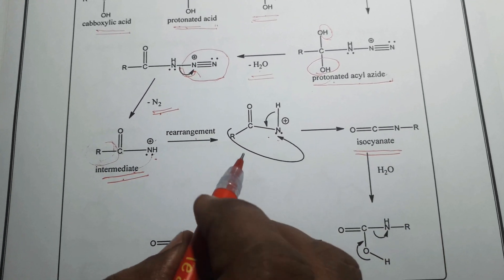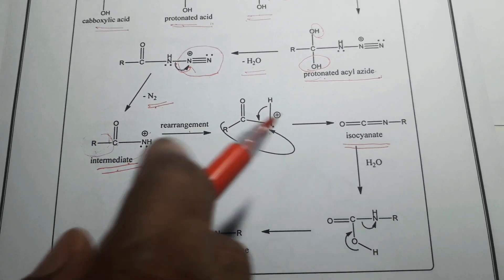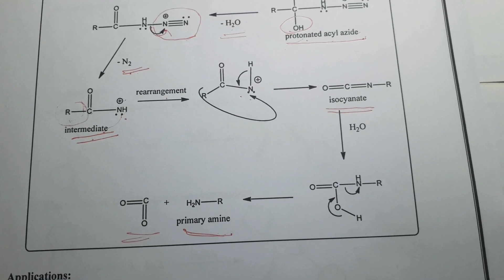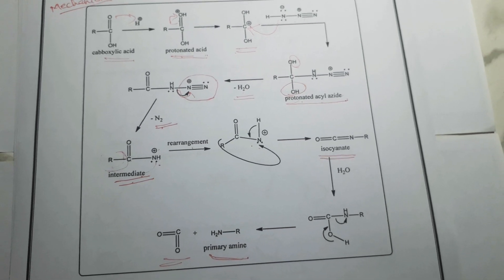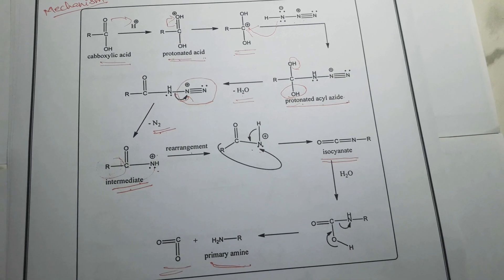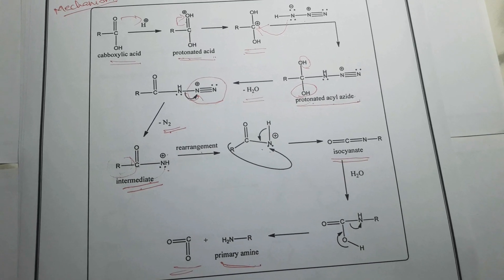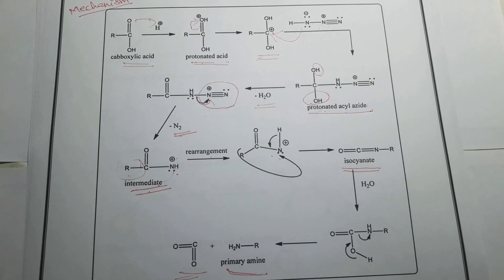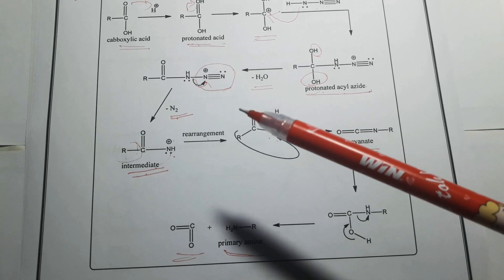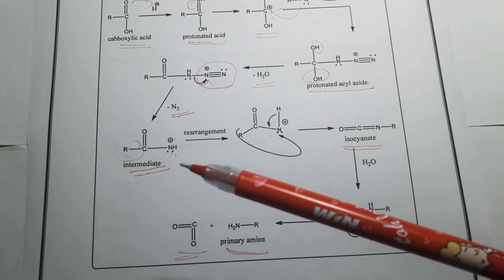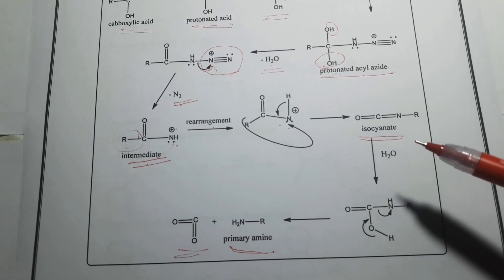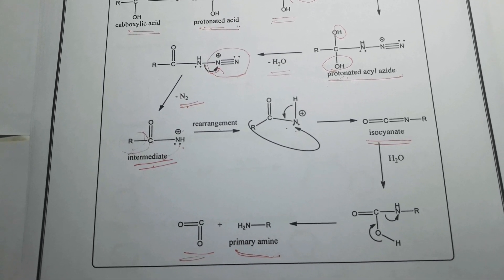The isocyanate, on hydrolysis, gives a primary amine with removal of carbon dioxide. So to summarize the mechanism: carboxylic acid takes a proton to give protonated acid → reacts with hydrozoic acid to give protonated acyl azide → loses water and nitrogen to give the nitronium ion intermediate → undergoes rearrangement to give isocyanate → hydrolysis gives primary amine by loss of carbon dioxide.